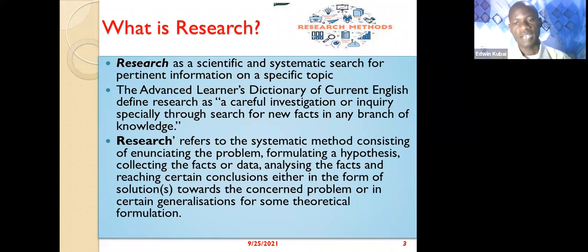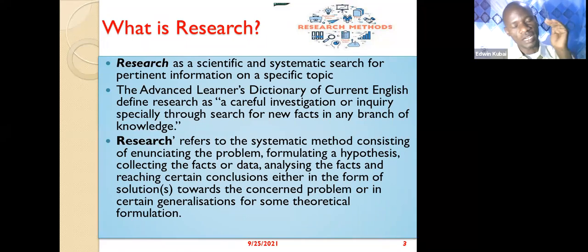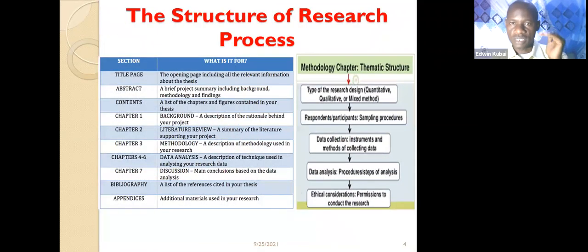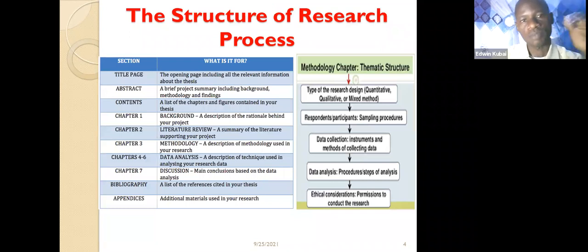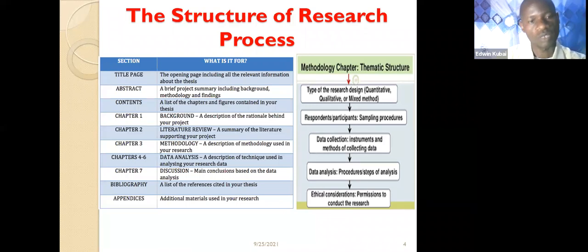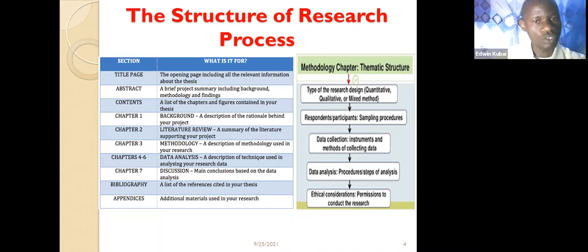You collect the facts — the data — analyze them, and reach certain conclusions, either as a solution to a given problem or as a generalization for theoretical formulation. For qualitative research, you may come up with a solution to a problem affecting the society or country. When looking at the structure of research, whether it's a thesis or another paper, you must have an opening page with all relevant information. If you are writing to donors seeking funds, the title should capture their attention and reflect the intended purpose. The abstract is very important — it is a pre-project summary including the background, methodology, and findings.